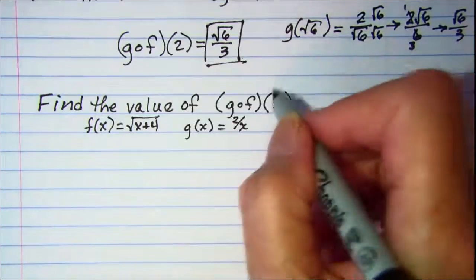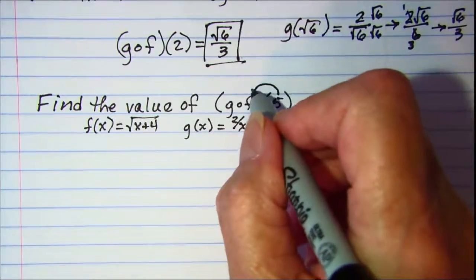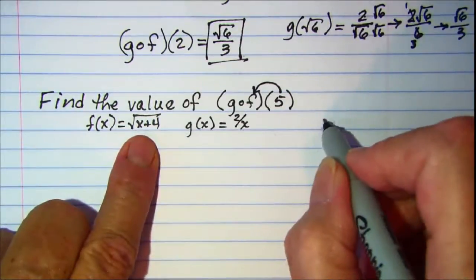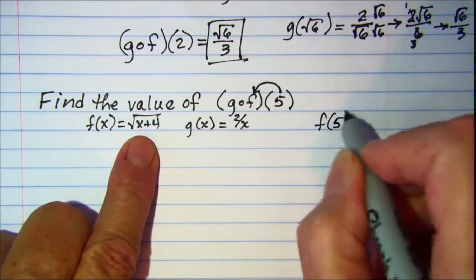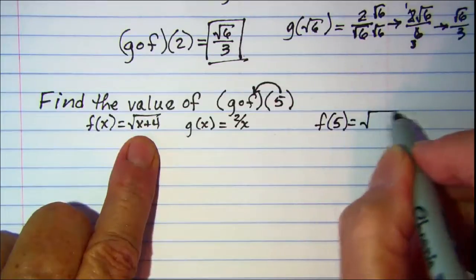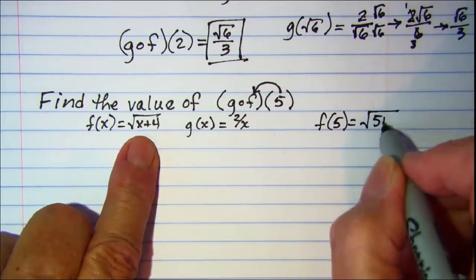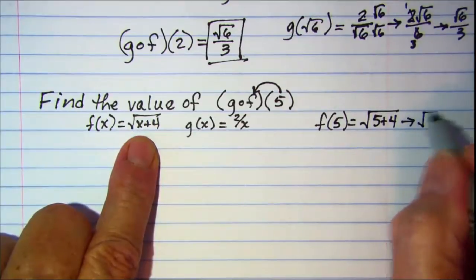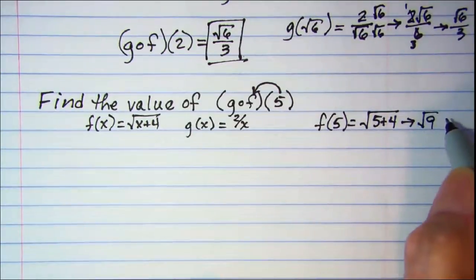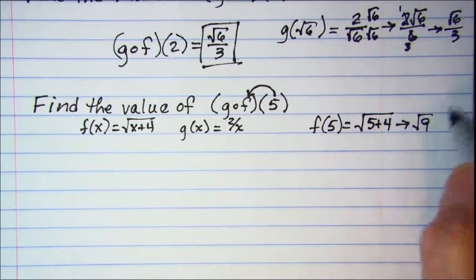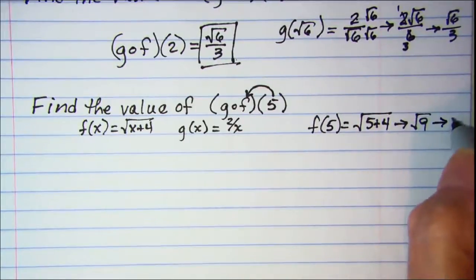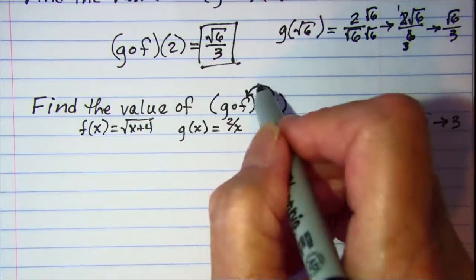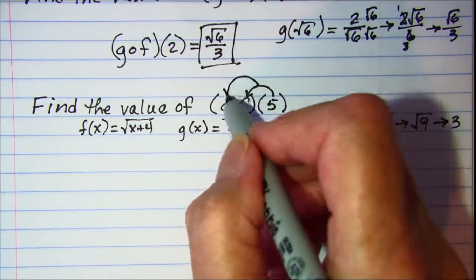So first I want to sub in 5 into my f function. So I have f(5) is equal to square root of 5 plus 4, which is square root of 9, and that simplifies to 3.